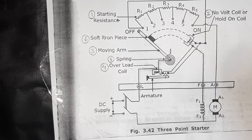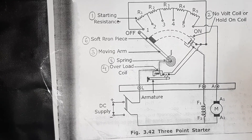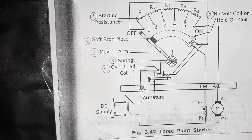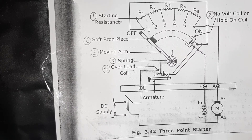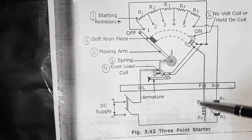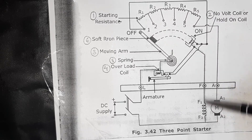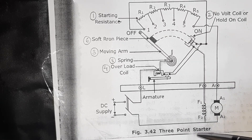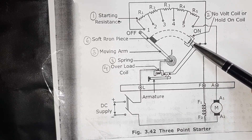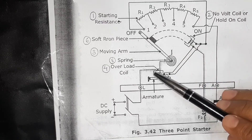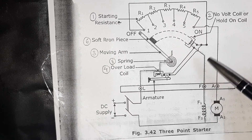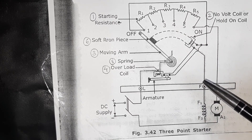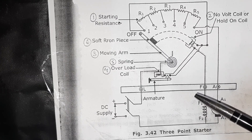In the three-point starter, there is one disadvantage. Suppose we have to speed-control the DC motor using the field control method. In the field control method, we reduce the field current. If this field current is reduced too much, since it passes through the hold-on coil, the hold-on coil will demagnetize even though there is no fault in the DC motor. Hence the moving arm is pulled back to the off position, resulting in disconnection of the motor from the supply. So we cannot achieve proper speed control of the motor using a three-point starter. This disadvantage will be overcome in the four-point starter. Thank you, friends.